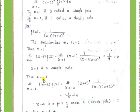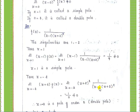For the second singular point z equal to minus 2, the power on z plus 2 is 2, so n equal to 2. Substituting into the general formula: limit z tends to minus 2 of z plus 2 whole square times f of z, which is 1 by z minus 1 into z plus 2 whole square. The z plus 2 whole square terms cancel, leaving 1 by z minus 1. Replacing z equal to minus 2 gives minus 1 by 3, which is a non-zero value. Therefore z equal to minus 2 is a pole of order 2, also called a double pole.